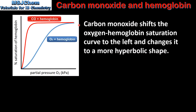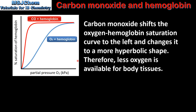Carbon monoxide shifts the oxygen-haemoglobin saturation curve to the left and changes it to a more hyperbolic shape, which we can see from the red curve on the graph. Therefore, less oxygen is available for body tissues.